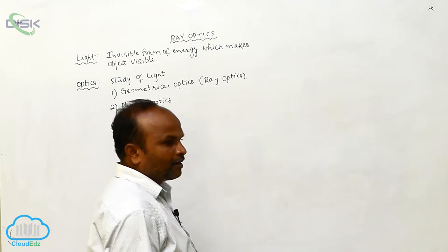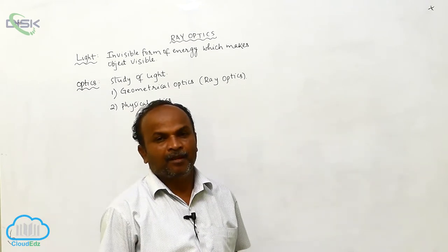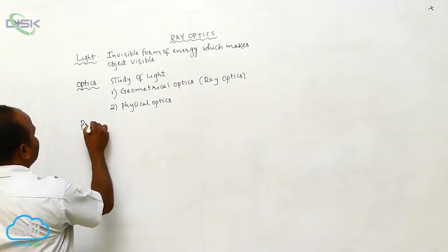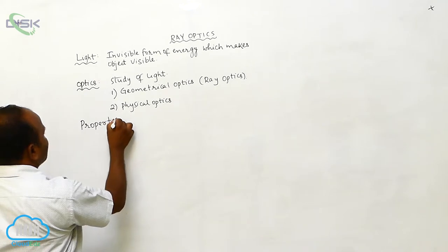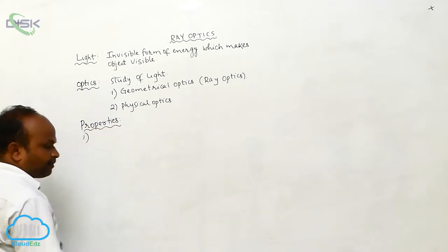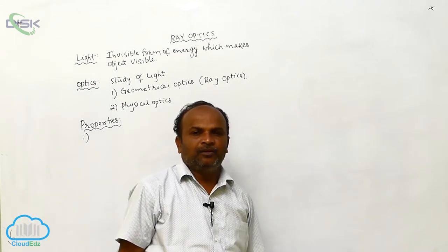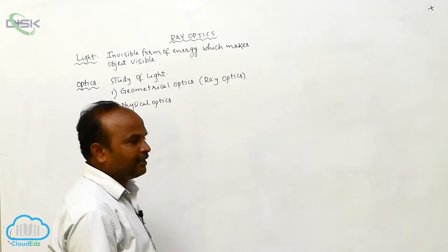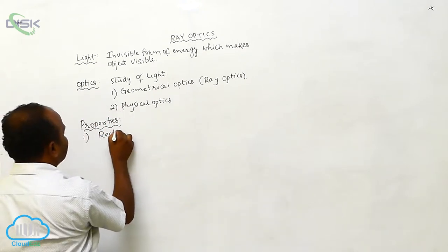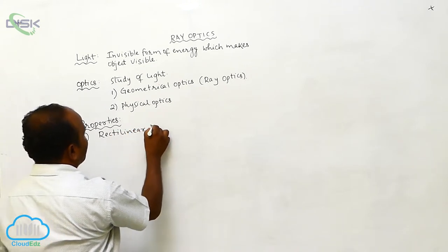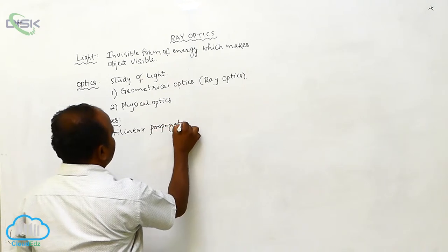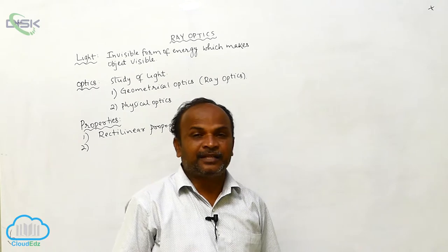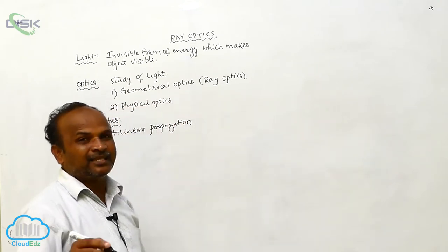Before going into geometrical optics and physical optics, what are the properties of light? First property: light undergoes rectilinear propagation, meaning light always travels in a straight line. Second, light selects the least time path.